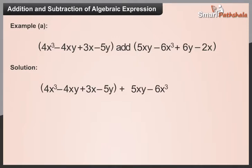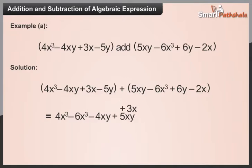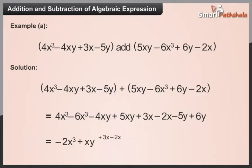This is equal to 4x³ minus 6x³ minus 4xy plus 5xy, plus 3x minus 2x minus 5y plus 6y. Equals minus 2x³ plus xy plus x plus y. Example B.